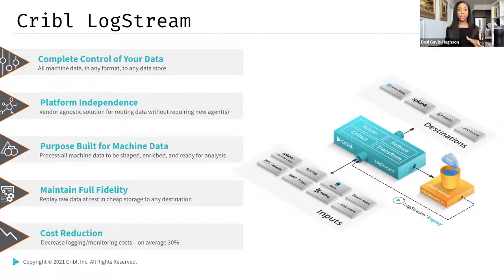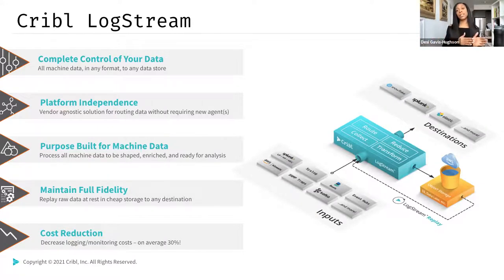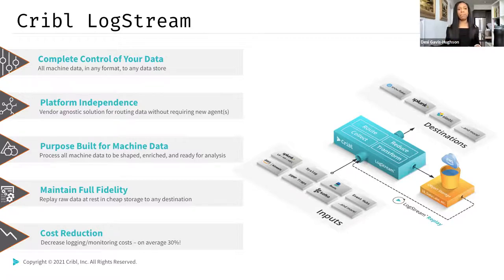Cribble Logstream provides a vendor-agnostic solution to route data to and from any tooling source or destination. In organizations, different teams use different tools. Logstream enables you to route data from team to team, from tool to tool, without any trouble. Regardless of which tools are in use, Logstream can centralize the forwarding of all machine data, get it to the right destination, and ensure it's shaped, enriched with whatever information you need, and ready for analysis or on standby for when it might be needed in the future.